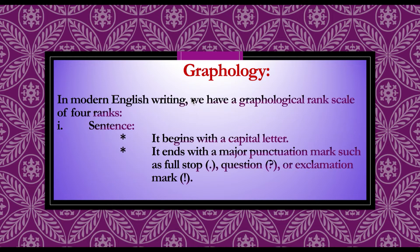Moving on: in modern English writing, we have a graphological rank scale of four ranks. Graphology is divided into four subcategories — four ranks or four divisions. Number one is sentence.